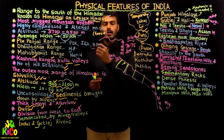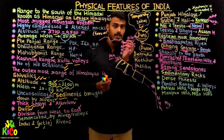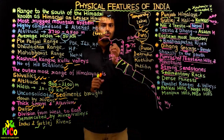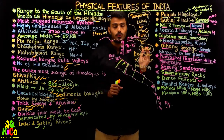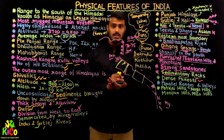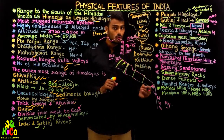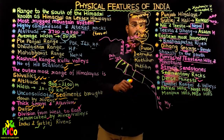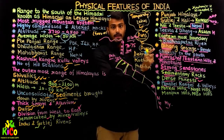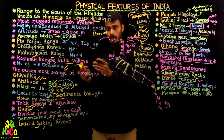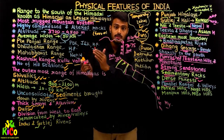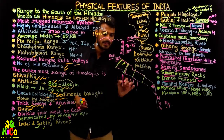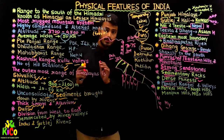The Purwachal region is also famous for its dense forests. The boundary with Myanmar runs along the Indian states of Arunachal Pradesh, Nagaland, Manipur, and Mizoram. There are parallel ranges of small hills and valleys here. They are not tall mountains but smaller hills with relatively lesser heights. Between the hills there are valleys, all running parallel to each other.